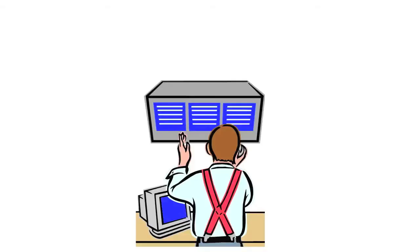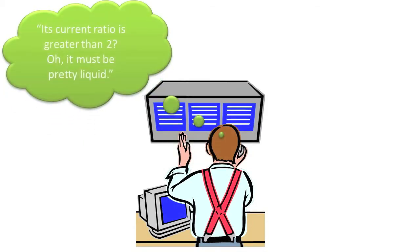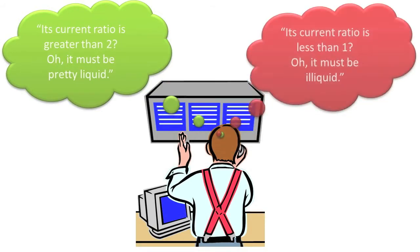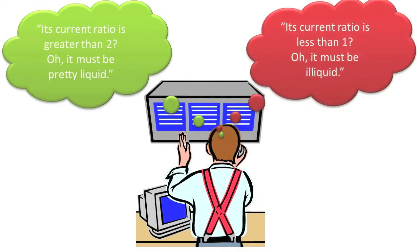What does the current ratio tell us and what does it not tell us? Some analysts interpret current ratios of 2 or above as indicating that a company is reasonably liquid, and interpret current ratios of less than 1 as indicating that the company is illiquid. However, be careful — even if a company's current ratio is greater than 2, the company may still not be very liquid, as the following discussion will illustrate.